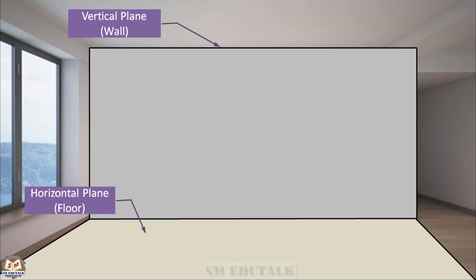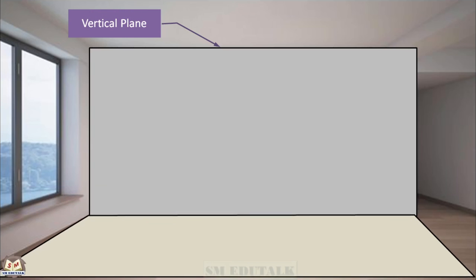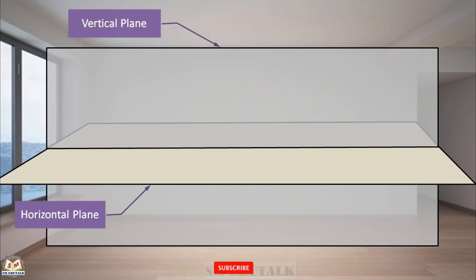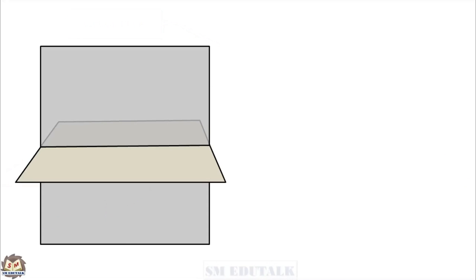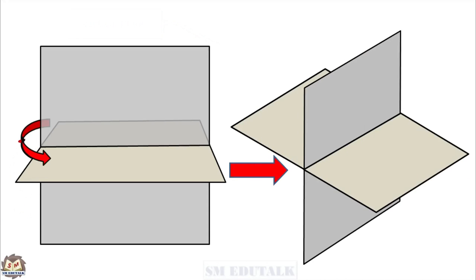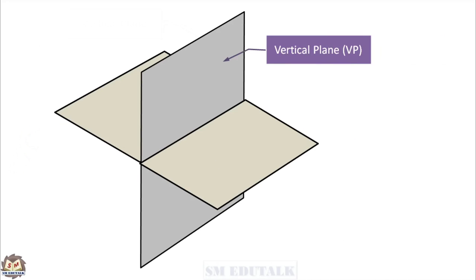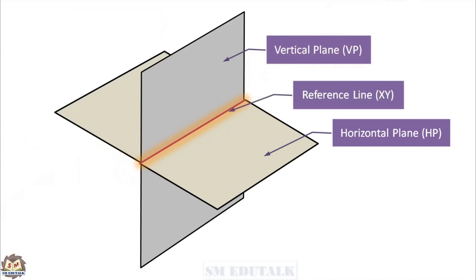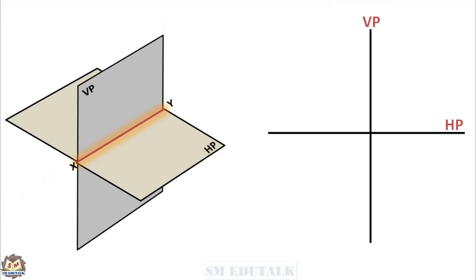The four quadrants used in orthographic projection are formed by two transparent principal planes — the vertical plane and horizontal plane, like wall and floor. The position of these planes should be rearranged to get the four quadrants. First, the horizontal plane is moved up to half height; next, the vertical plane is moved front to half width. These mutually perpendicular planes are moved out and slightly turned in an anti-clockwise direction for a better view. We call the vertical plane as VP, horizontal plane as HP, and the intersecting line between VP and HP as reference line XY.